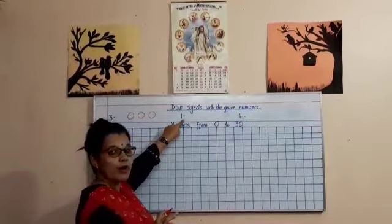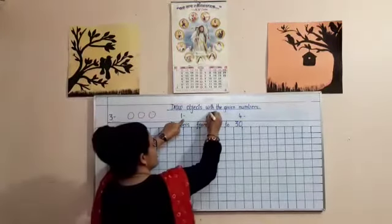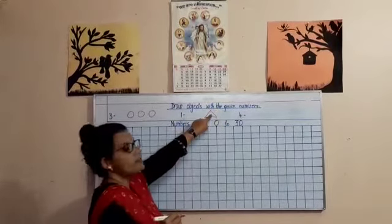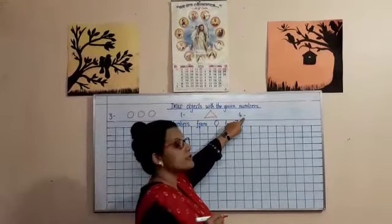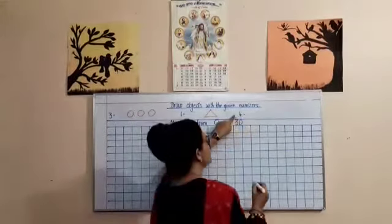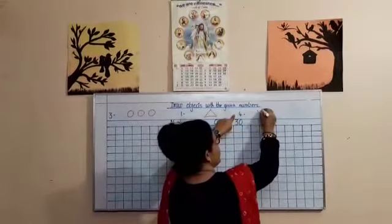Next number is 1. So, you just have to draw 1 object. You can draw a triangle and count it. Number 1. Go to the next number. This is number 4. You have to draw 4 objects. You can draw anything.